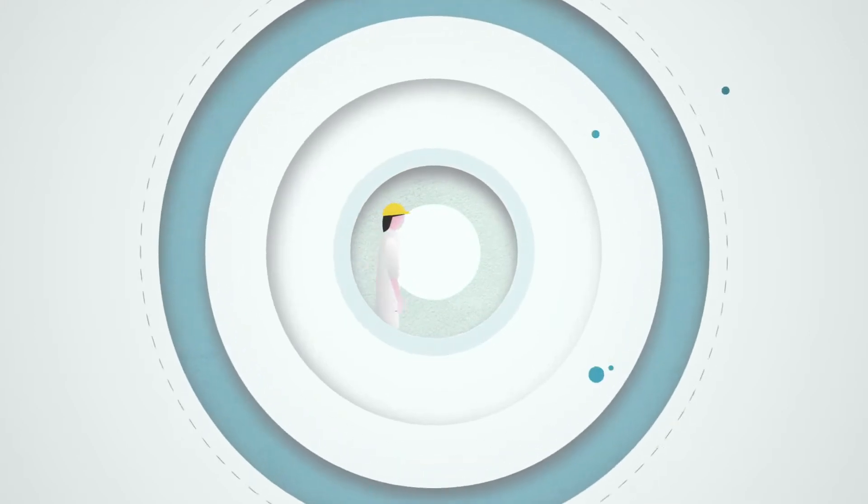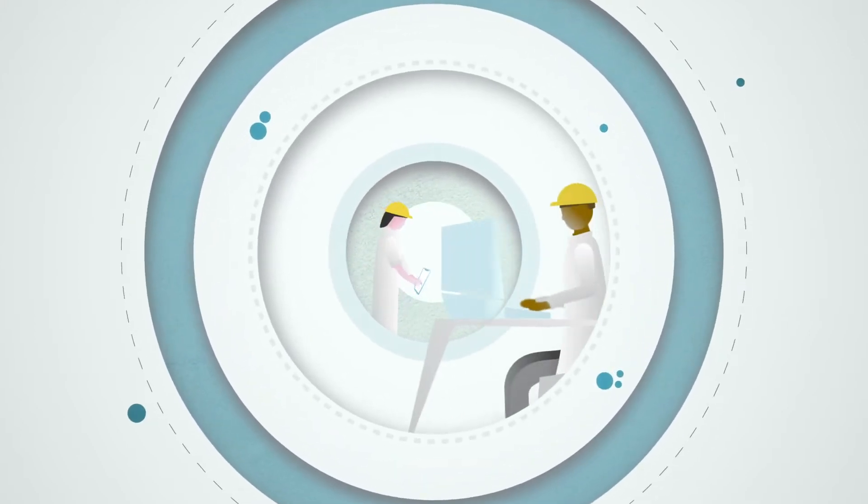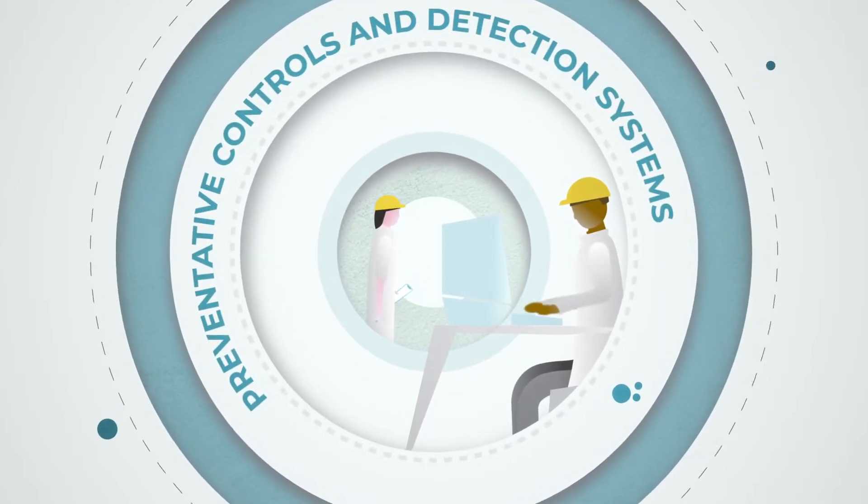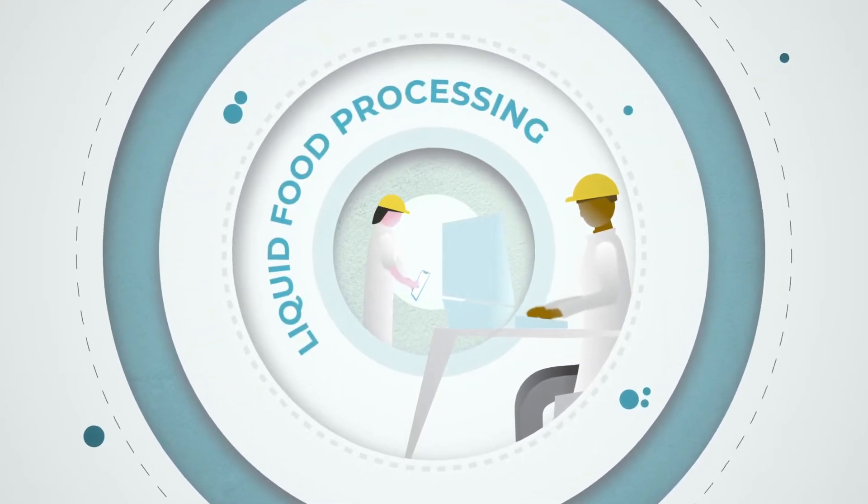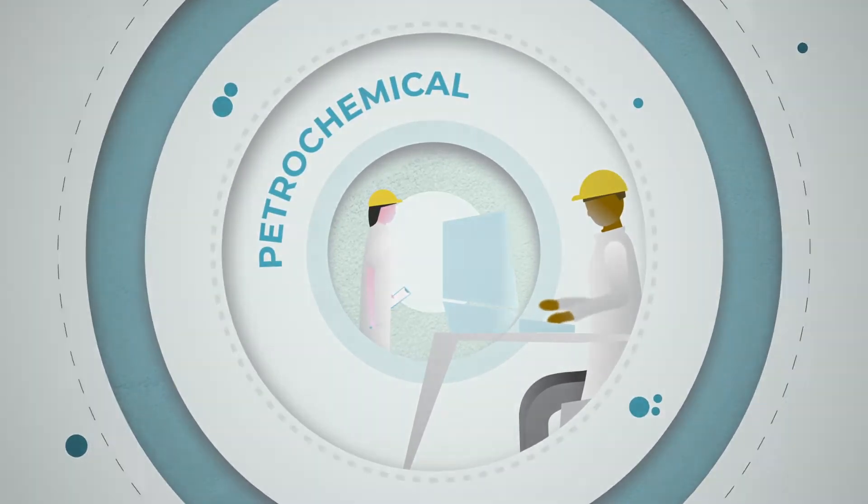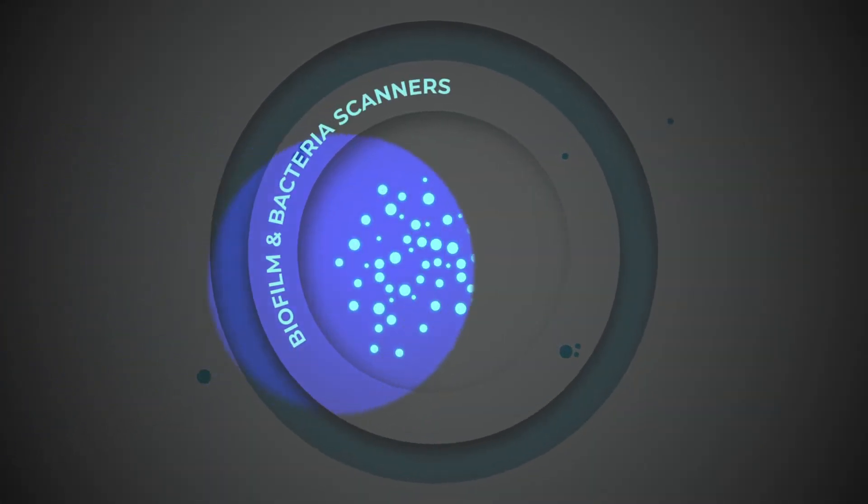EIT International is an industry leader in the development and supply of environmentally friendly preventative controls and detection systems for the liquid food processing, nutraceutical, pharma-medical and petrochemical industries. Our diverse product and service offering includes biofilm and bacteria scanners,